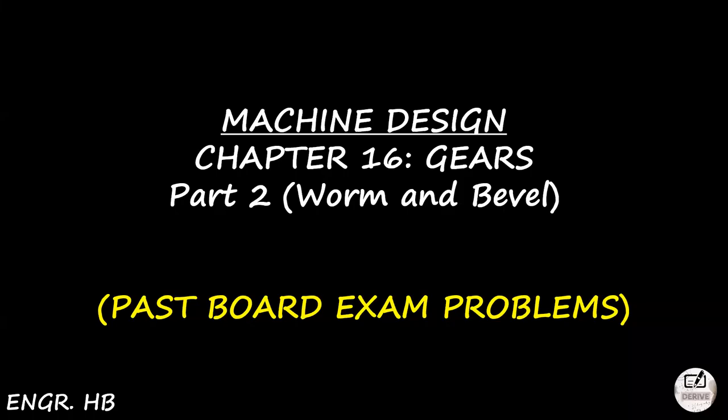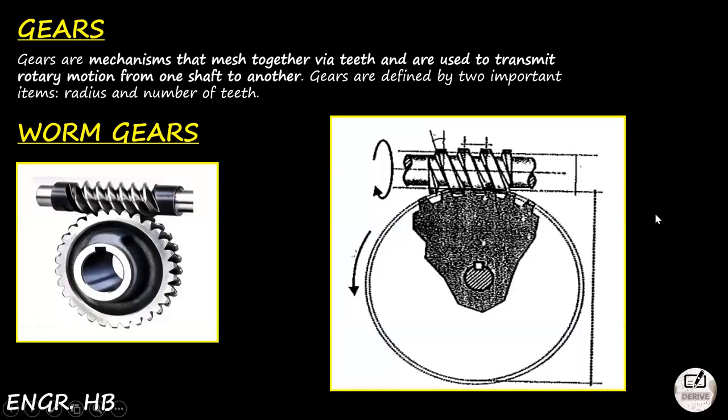Hi guys, welcome back again to Derive. In today's video we're going to finish Chapter 16, which is all about gears in machine design. In this Part 2 we're going to tackle the worm and bevel gears, which are the third and fourth basic types of gear. We already discussed the spur and helical, so now worm and bevel.